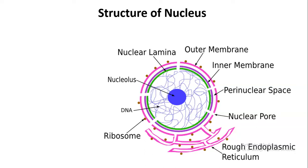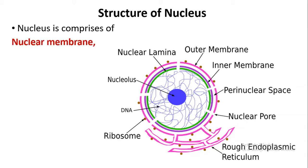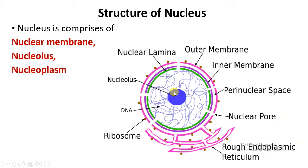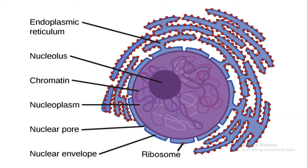Hello students, welcome. I am Jyothi Rajput and today we will study the structure of the nucleus. Here you can see the diagram of the nucleus. It comprises the nuclear membrane, the nucleolus which is a dense structure, the transparent fluid structure called nucleoplasm, and the chromatin fiber. These thread-like structures are called chromatin fiber. So in detail we will study the structure of the nucleus.